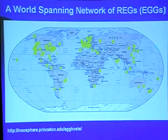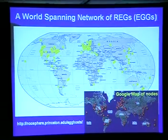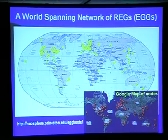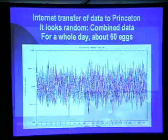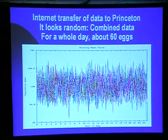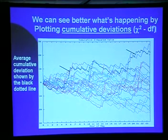This is what the network looks like spread out over the world. You'll see a lot of concentration in the U.S. and Europe, but we have tried to get a distribution that was big enough so we could ask questions about distance. The data flow through the Internet to Princeton, and that's what the data look like when they're coming in.